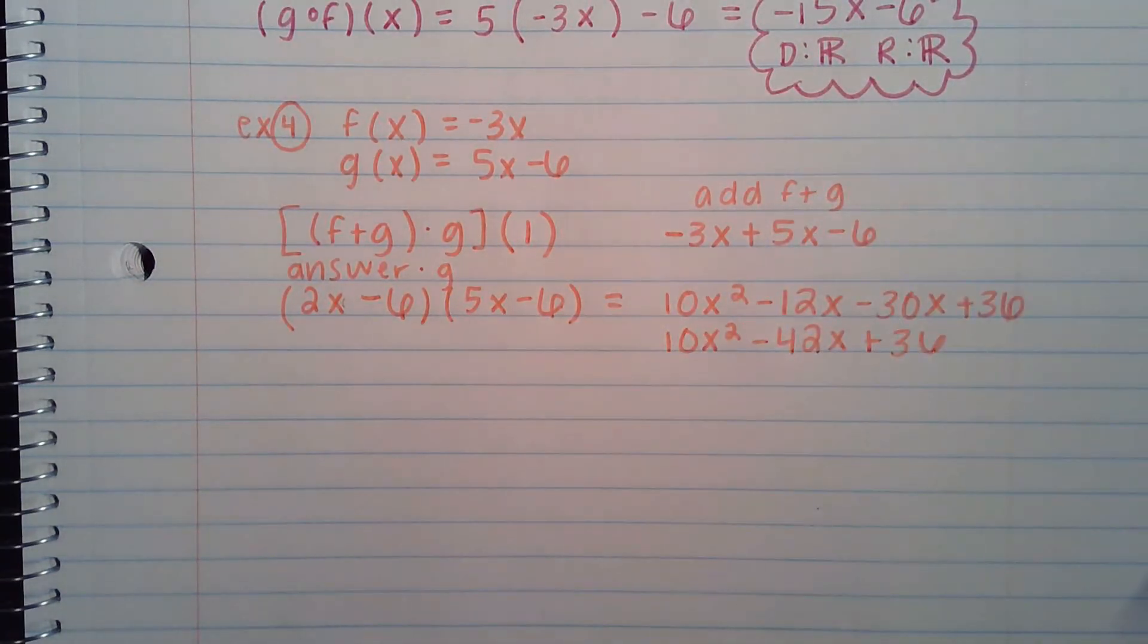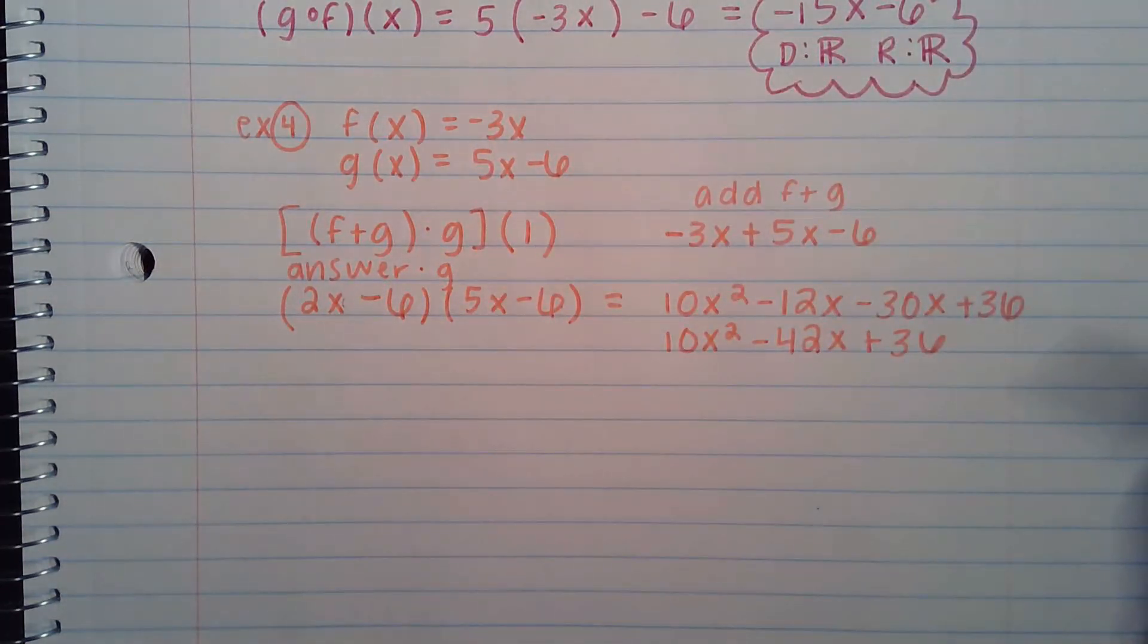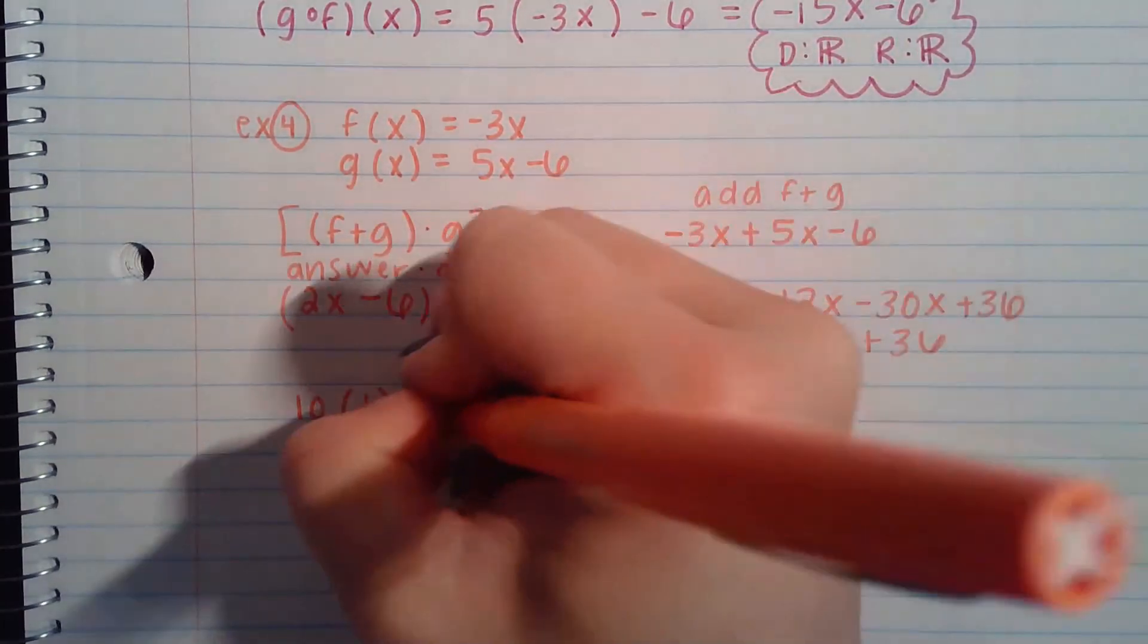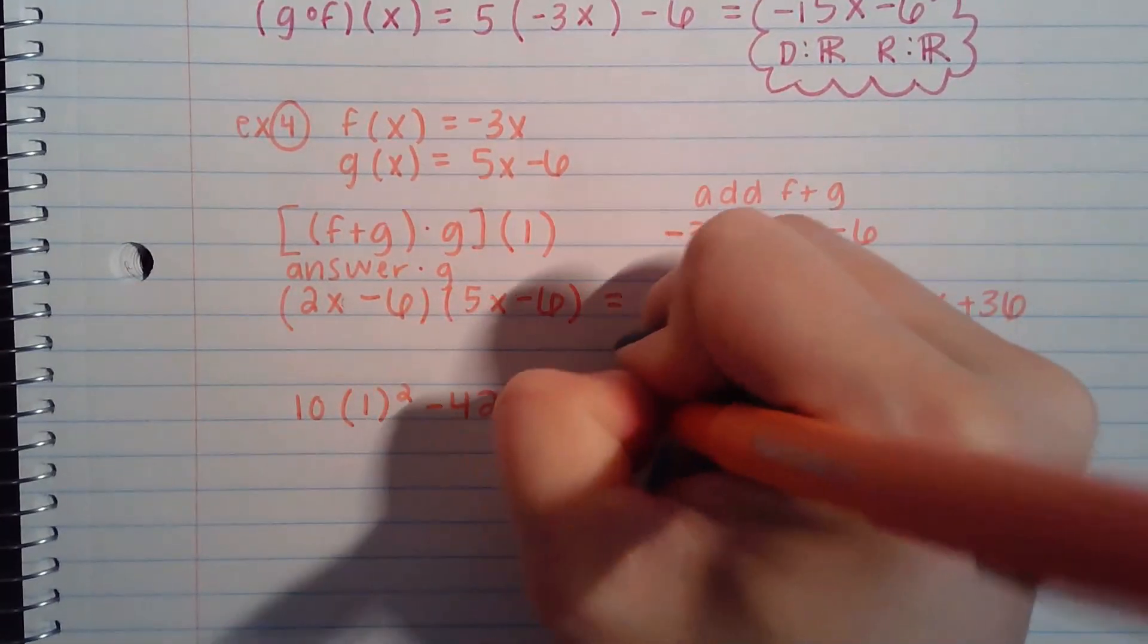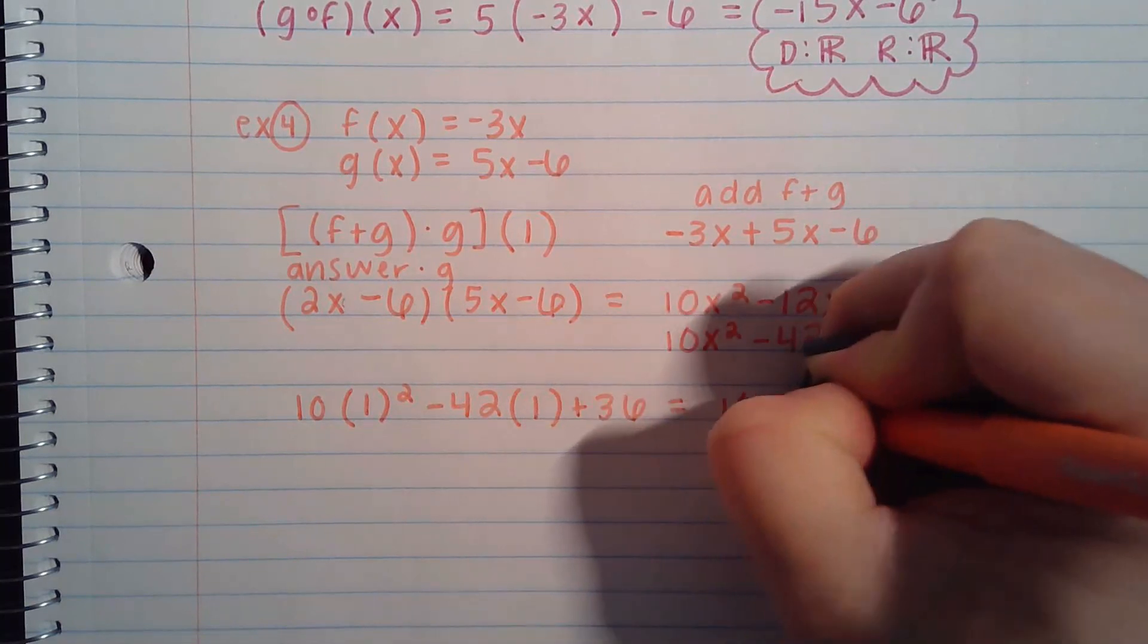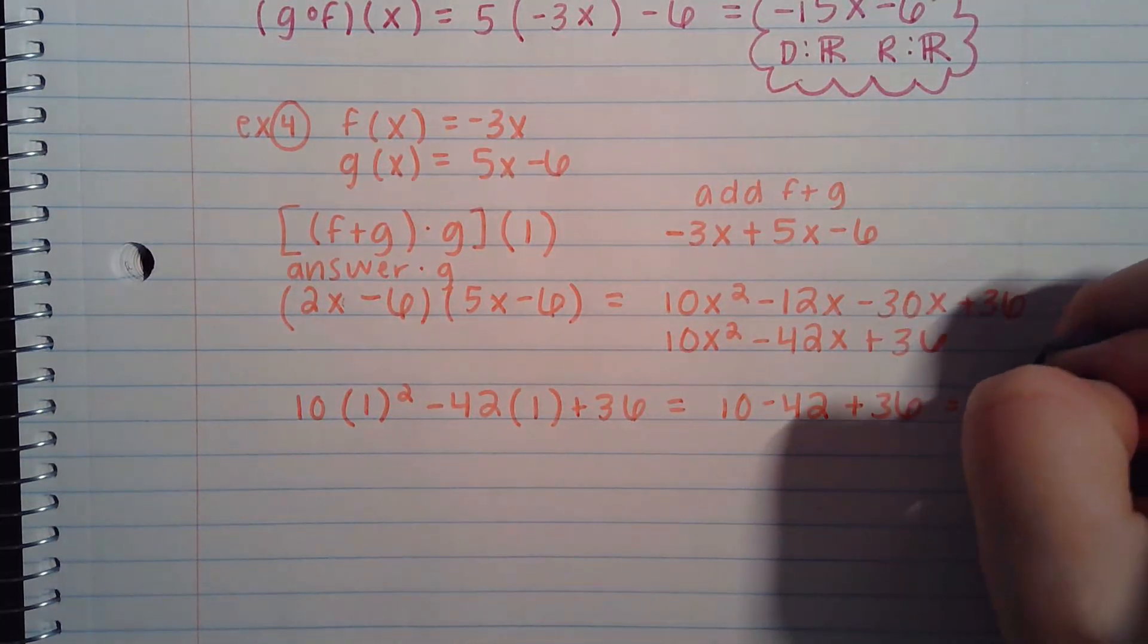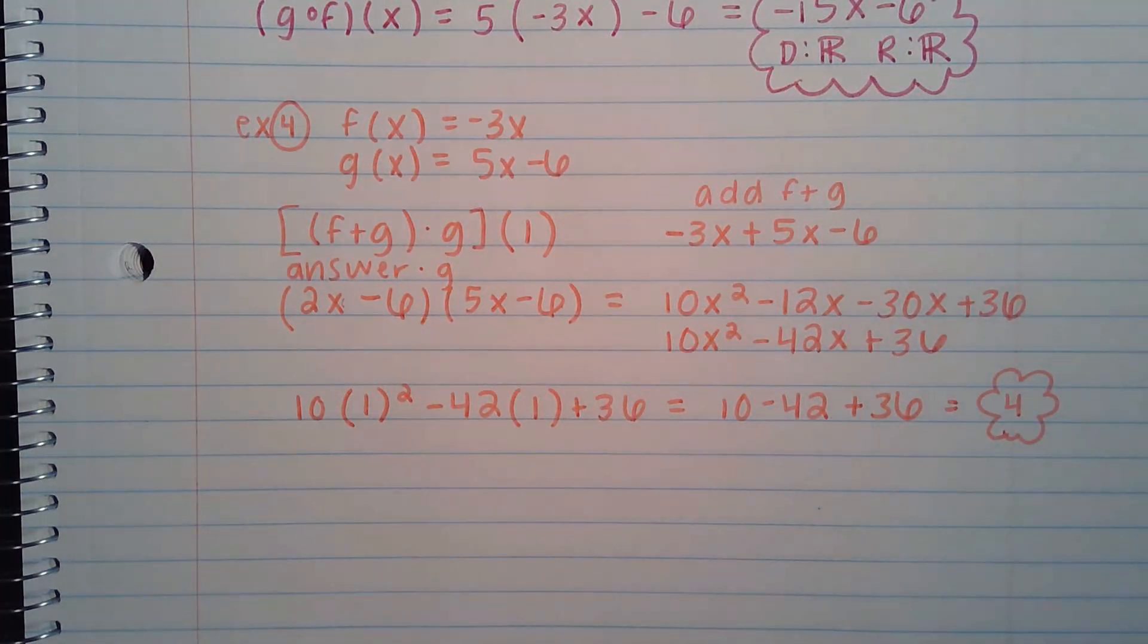That, we're not quite at our answer though, so don't just stop there. Remember the last thing that we would want to do is plug in a 1 anywhere we see an x. So you would actually want to finish solving this, which this one's kind of easy because anything with a 1 is not going to actually change it. So the work for it will be 10 minus 42 plus 36, which if you put that in your calculator or do it in your head should give you 4. That's the end of the review for chapter 6-1. So that should help you with the whole first half of your review assignment that's due tomorrow before your class time starts.